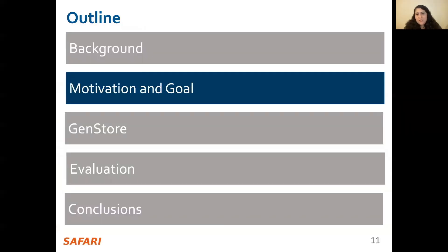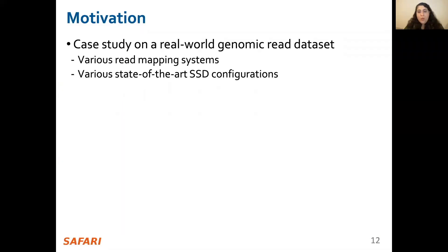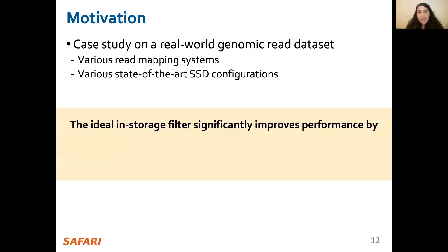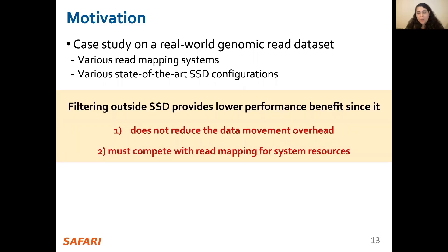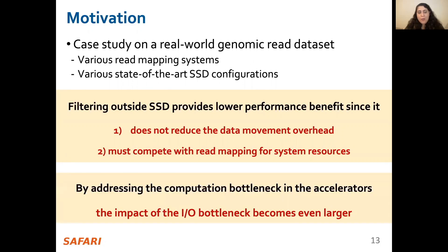We perform experimental studies to understand the potential of efficient in-storage filters. We perform a case study on a real-world genomic read dataset on various readmapping systems and state-of-the-art SSD configurations and make several observations. First, ideal in-storage filters significantly improve performance by reducing computation and data movement overheads. Second, filtering outside the SSD provides lower performance benefit since it does not reduce data movement overhead and must compete with readmapping for system resources. Third, by addressing the computation bottlenecks in accelerators, the impact of the IO bottleneck becomes even larger, therefore necessitating the need for a storage filter even further.